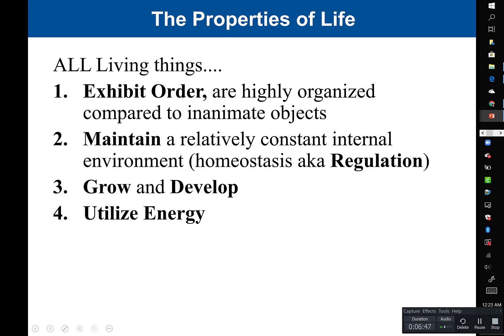All living things utilize energy — they have to take in and use energy. For us, we get energy through the food we eat. We are what's called a heterotroph: hetero meaning other, troph meaning feeder — we have to consume our food to survive. Other organisms use sunlight as their form of energy. Plants do photosynthesis — they convert solar energy into chemical energy, making glucose. They make their own food. But all organisms have to utilize energy.